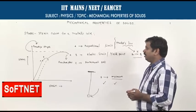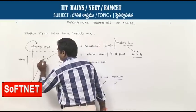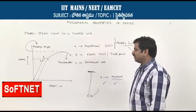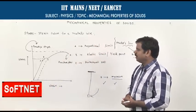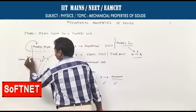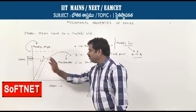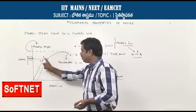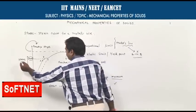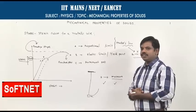At point B, whenever you release the load, the body comes back to its original size and shape. This maximum stress — even after applying and then releasing the maximum load — allows the body to return to original size. So this maximum stress is called the elastic limit.